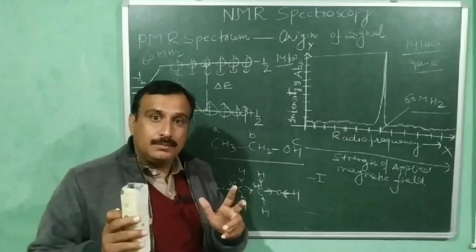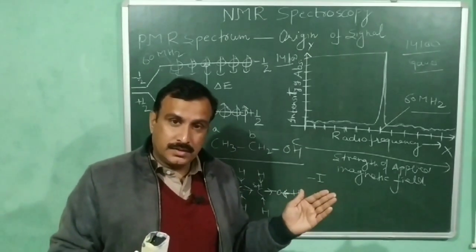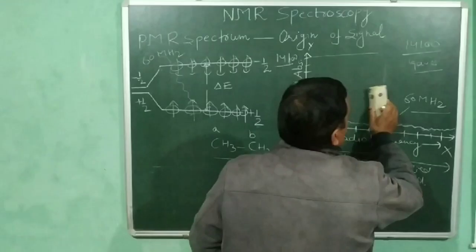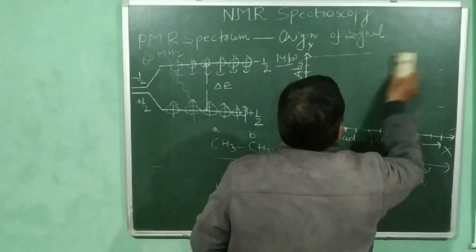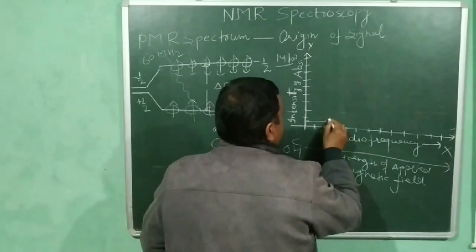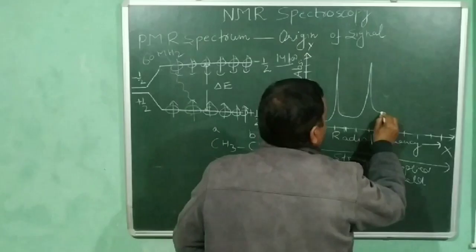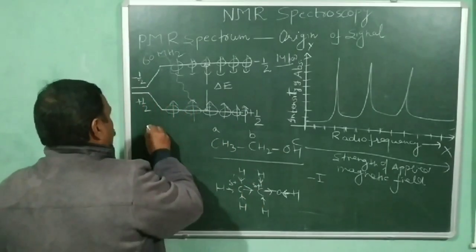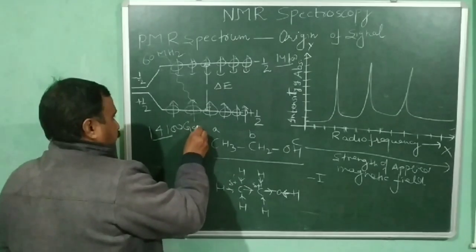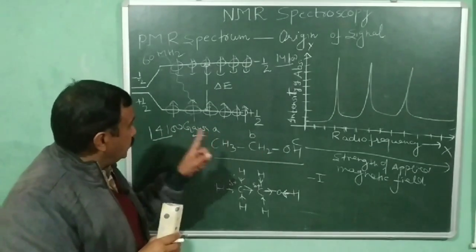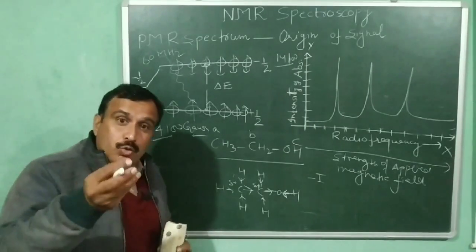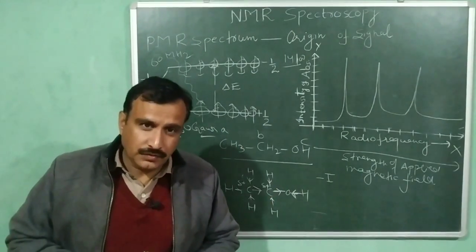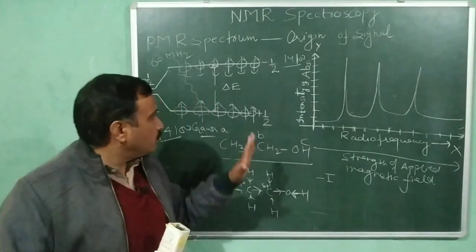Because these three types of protons are in different chemical environments, they will absorb at different applied magnetic fields and give signals at different applied magnetic fields. This means that instead of one signal in the NMR spectrum of ethanol, we will have three signals. All these protons effectively need to feel 14,100 Gauss at the nucleus, but to achieve that we must apply different external magnetic fields for each type, since the surrounding electrons partially shield the nucleus.